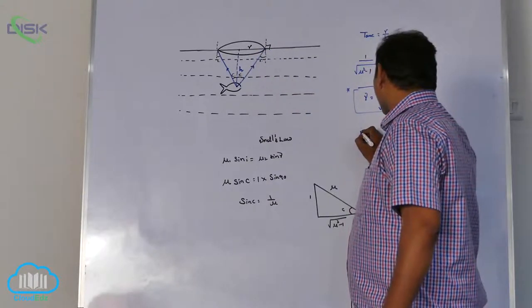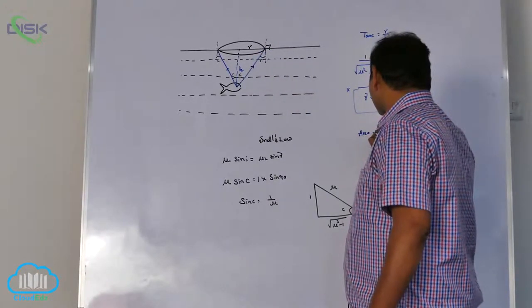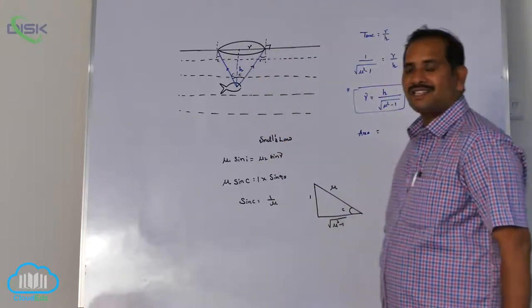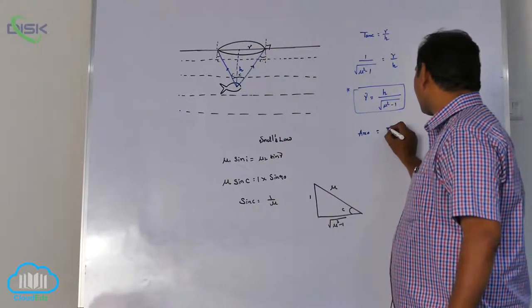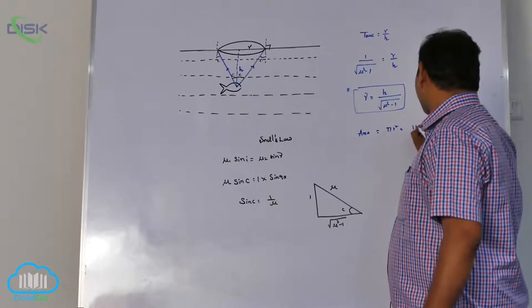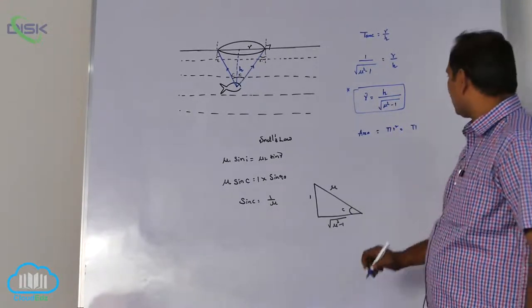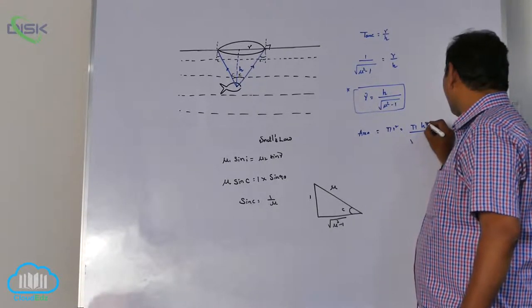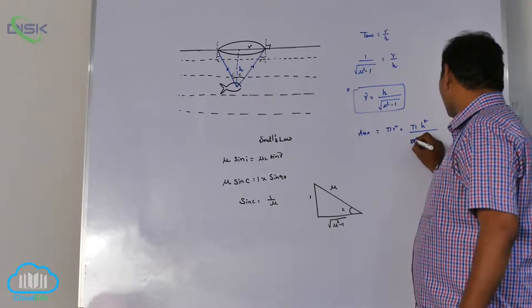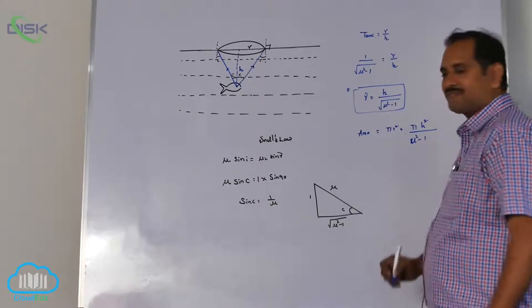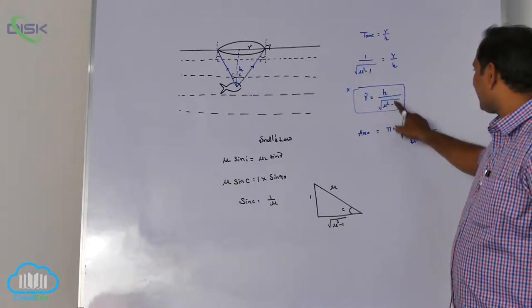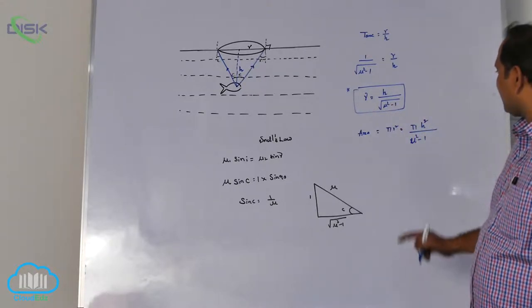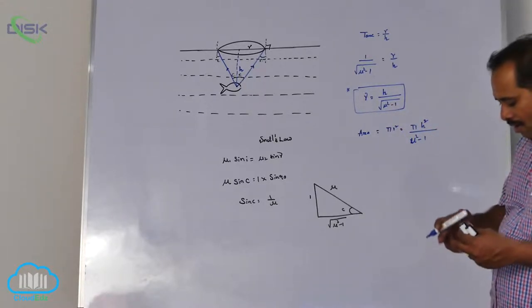Area of the cone. I think you observe this is a circle. Circle area pi R square. Pi into R square is H upon root mu square minus 1 whole square, means H square upon mu square minus 1 is the area of the cone.